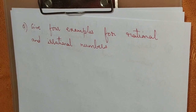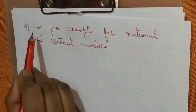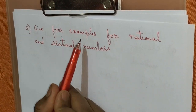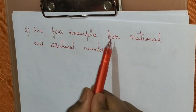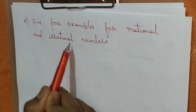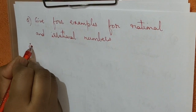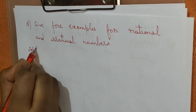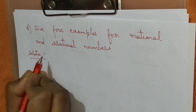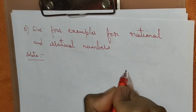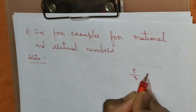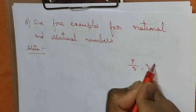Hello everybody, today we will discuss a topic in mathematics. Give 4 examples for rational and irrational numbers. We know what rational numbers are — numbers which are in the form of p by q, where q is not equal to 0.